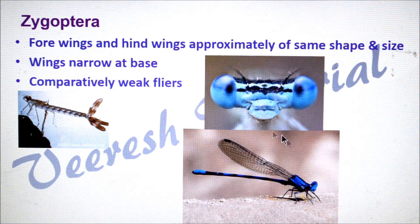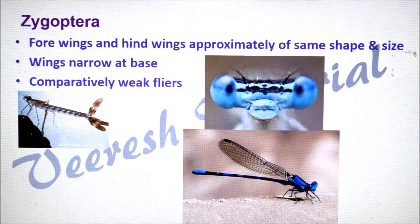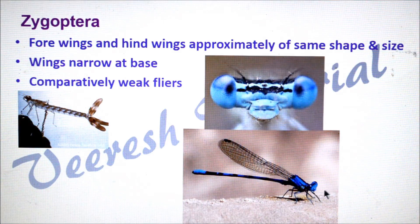Next one is Zygoptera — damselflies come under this suborder. Here forewings and hindwings are approximately of the same shape and size, and wings are petiolated, that is narrow at the base. Comparatively, damselflies are weak flyers and niads respire through caudal gills. Compound eyes of damselflies are dioptic, and during rest wings are held at an angle over the abdomen.